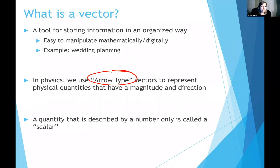Think of a vector as storing information in an organized way. In this example, arrow-type vectors store two pieces of information: a magnitude and a direction.